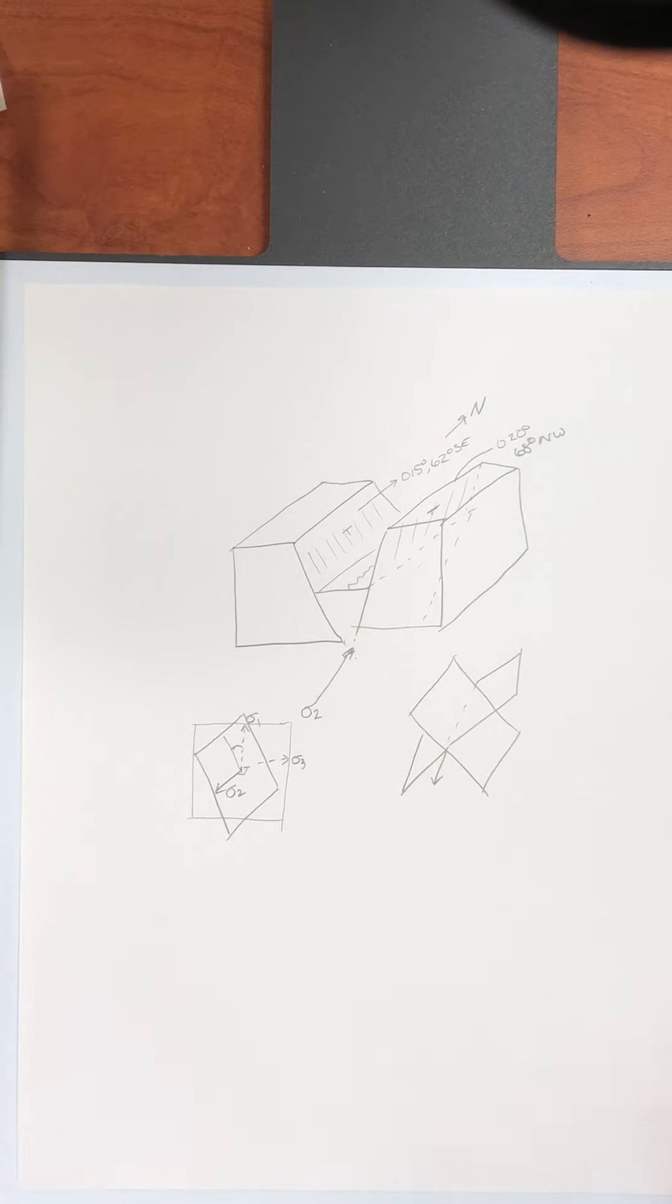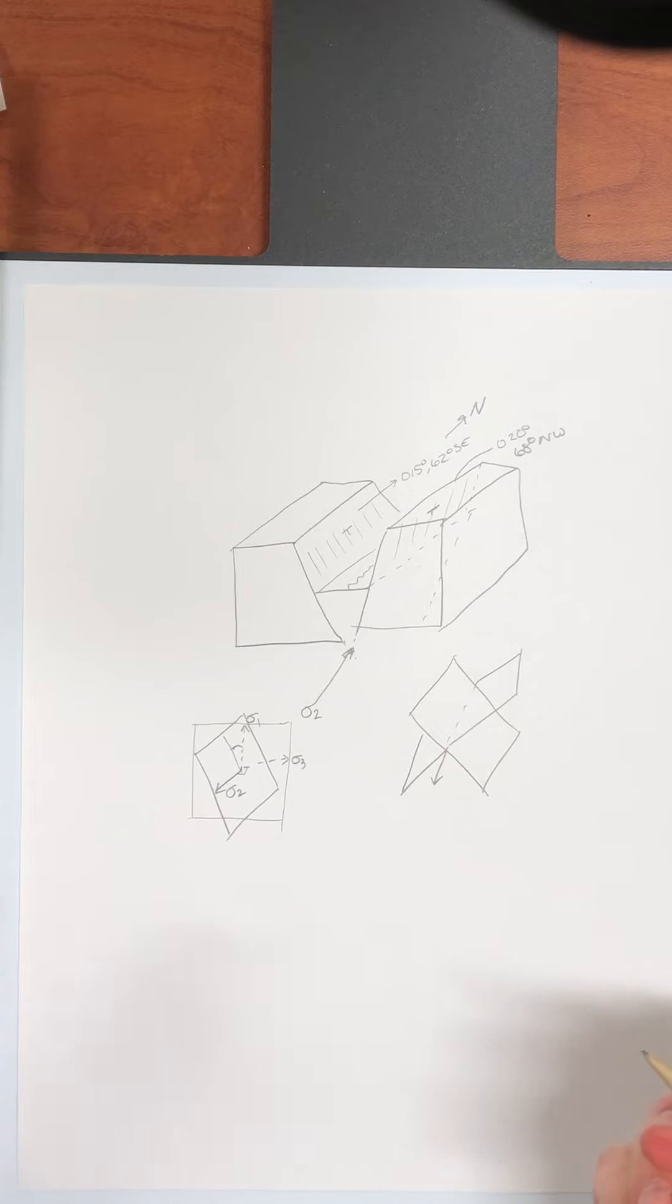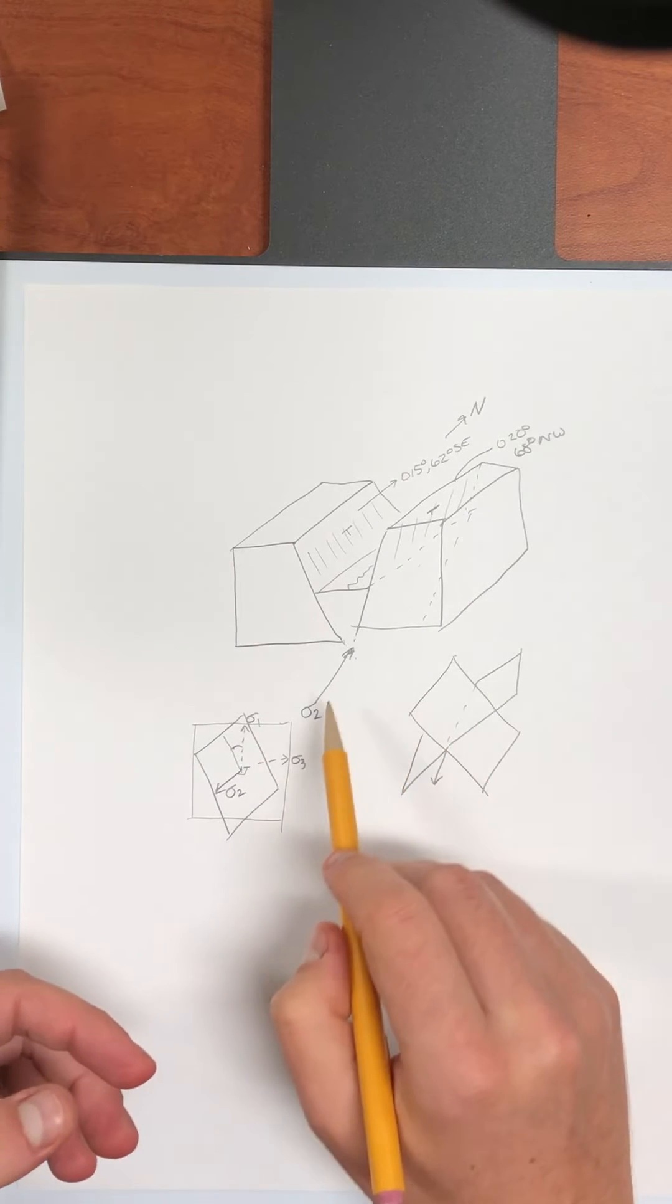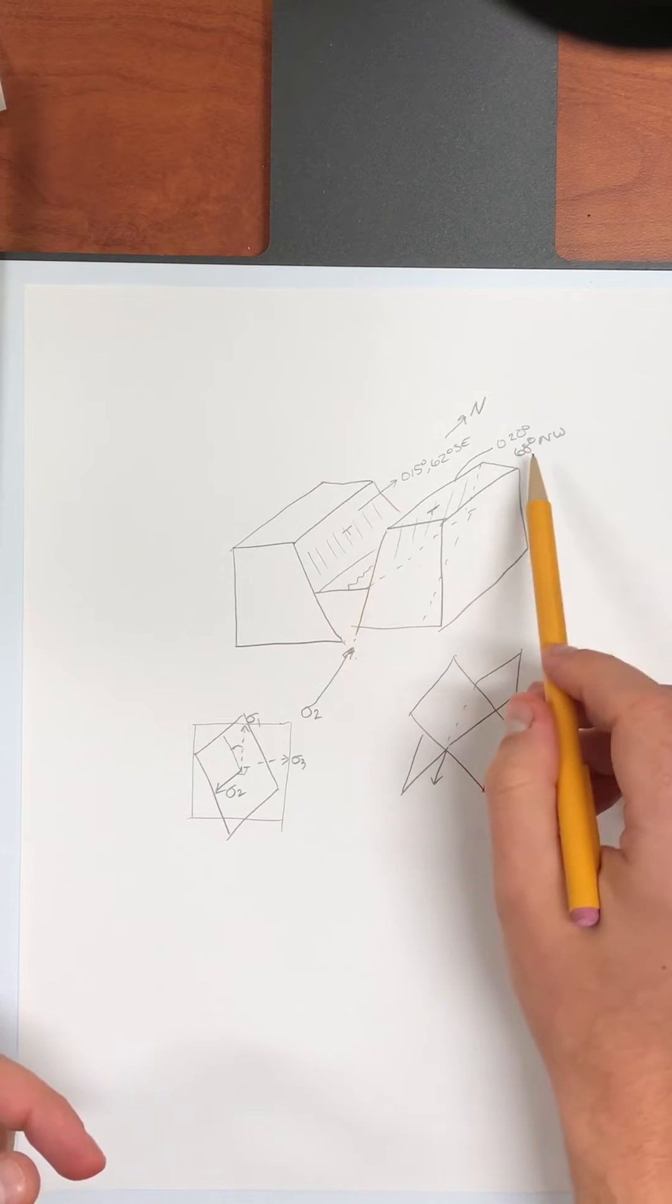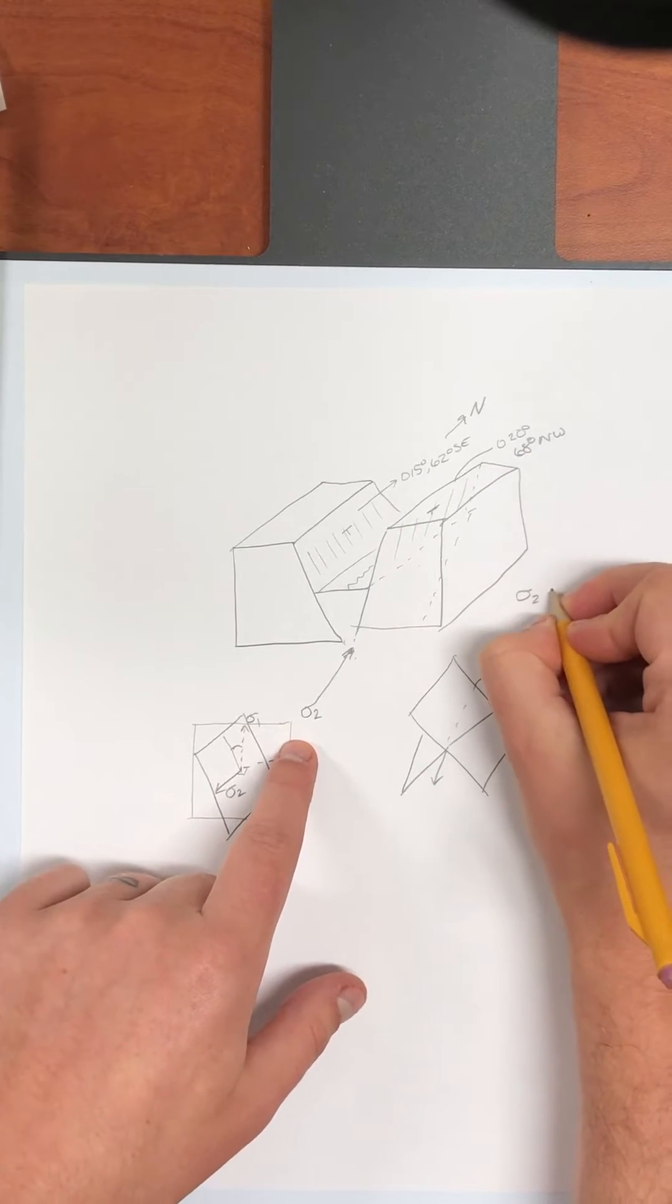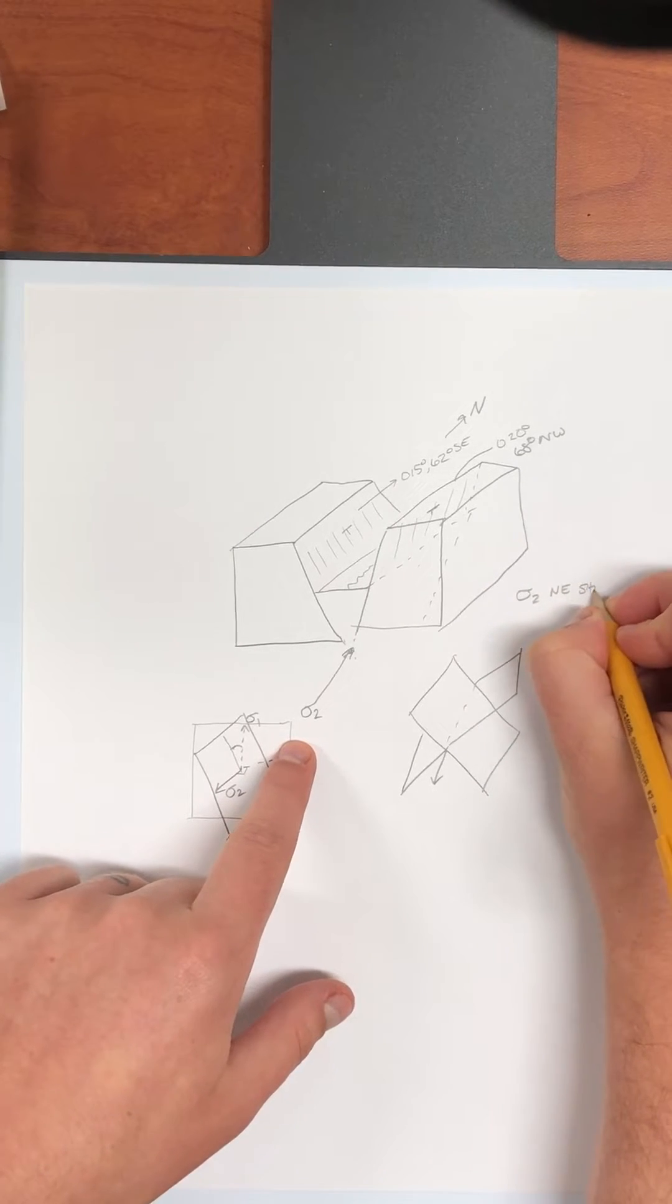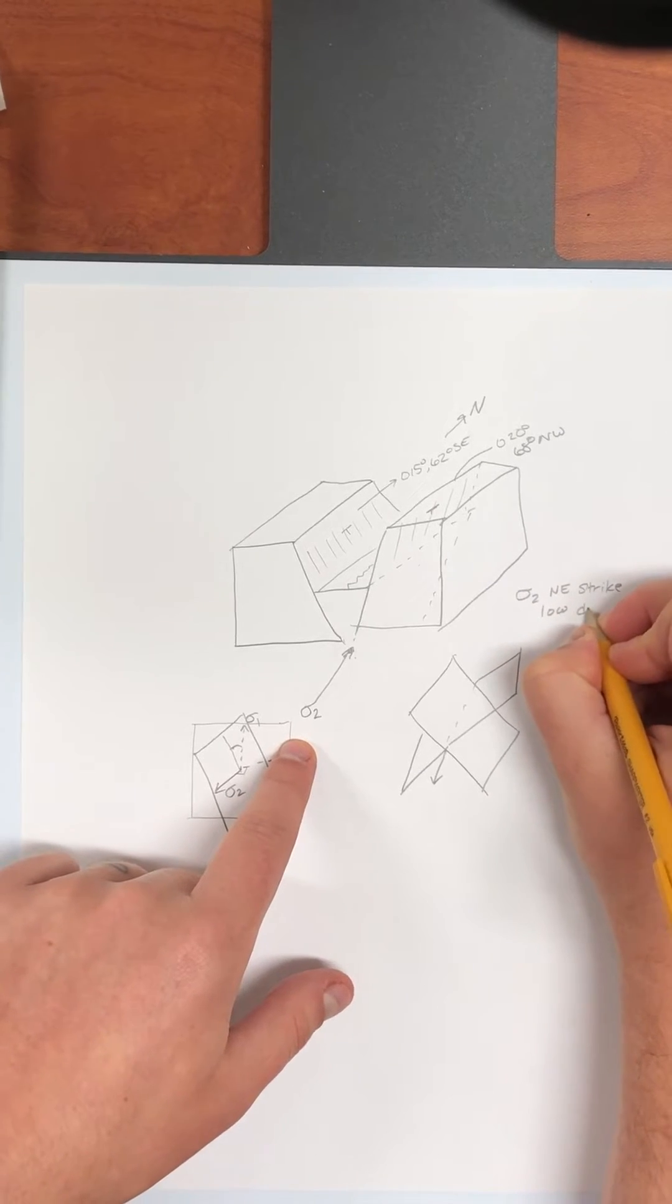Okay so now that we've got this broken down a little bit let's make some predictions. So if this is a normal faulting system and sigma 2 is horizontal I'm going to expect sigma 2 to have about the same strike as these two measurements. So sigma 2 I'm anticipating to have a northeast strike and a low or shallow dip.